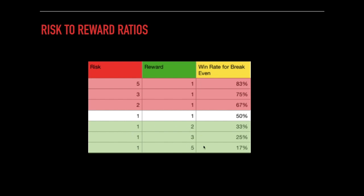Anything in this green area is what we call a positive risk-to-reward ratio, and these are the ratios you should be using when applying a risk management strategy, because you don't need a high win rate to make money or at least break even — it's more forgiving. Sometimes you'll be on a hot streak with a 70% win rate, and sometimes on a cold streak with only 40%, so staying in this positive range gives you more flexibility.